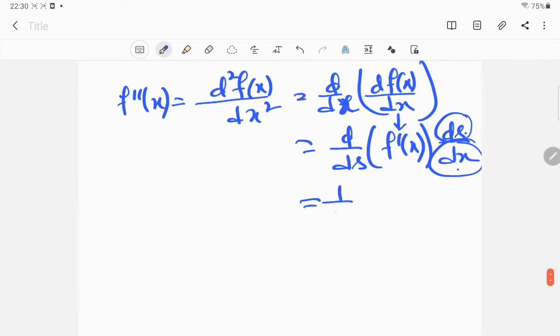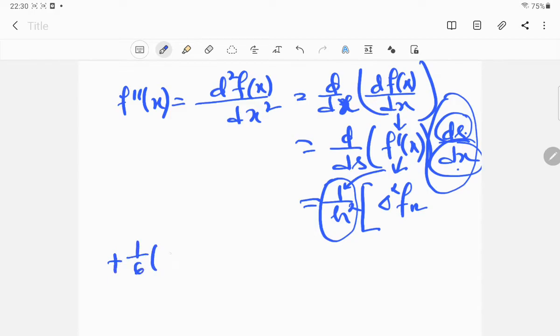Now if you follow the steps similarly, because you know that d s by d x is nothing but one by h. Since there's already one by h, total it will be one by h square. If you simplify it you can try it at home and you can find out it will come out to be like this. So I'm not going to repeat all the things, this is simply mathematics.